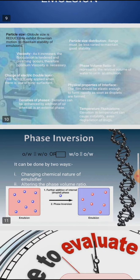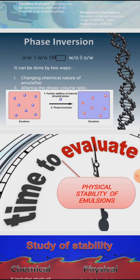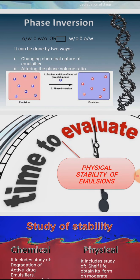Next, we will discuss phase inversion. Phase inversion means a change of emulsion type from O/W to W/O or vice versa. Phase inversion can be obtained by two methods: first, by changing the chemical nature of the emulsifier, and second, by altering the phase volume ratio.